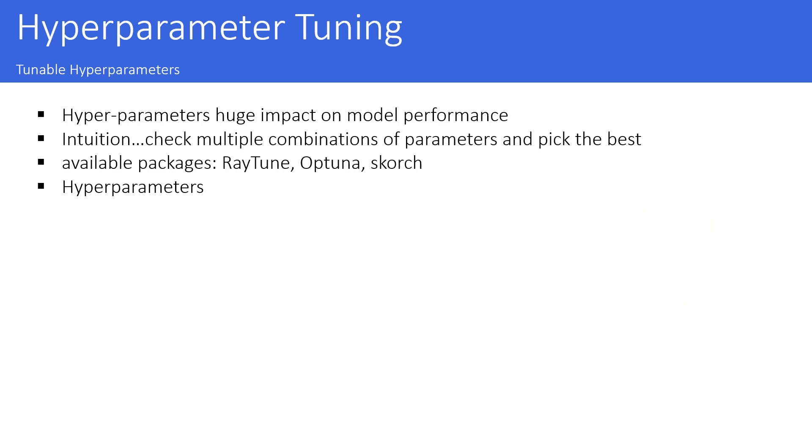Let's assume there is a need to perform hyperparameter tuning. And then the question is how can you actually do that? The intuition is that you want to check multiple combinations of parameters and then in the end just pick the best one. There are also certain packages that you can use. Here I just name some like Raytune, Optuna and Scorch. The last one is what we are going to use in our coding lecture.